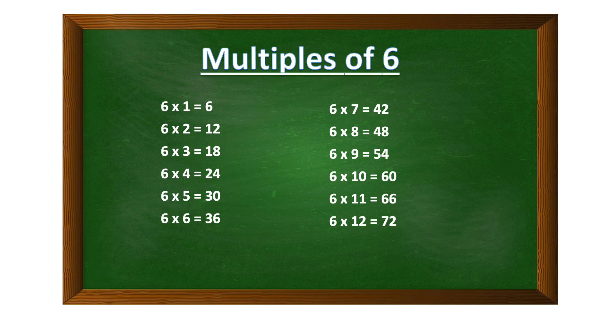Six times twelve is seventy-two. Multiples keep going on and on — they don't stop. So the multiples of six are six, twelve, eighteen, twenty-four, thirty, thirty-six, forty-two, forty-eight, fifty-four, sixty, sixty-six, seventy-two, and so on.